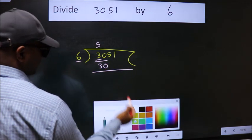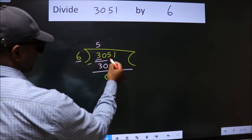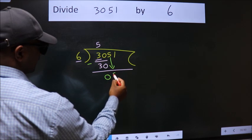Now we should subtract. We get 0. After this, bring down the beside number. So 5 down.